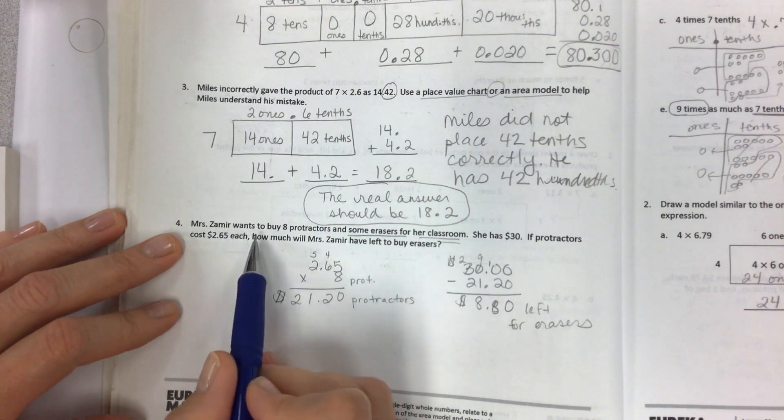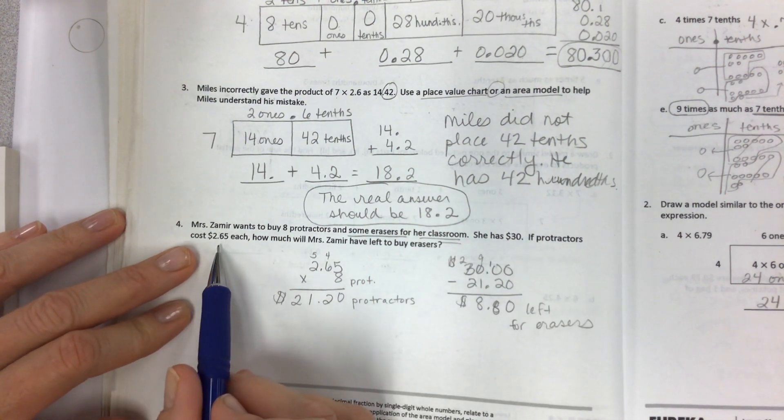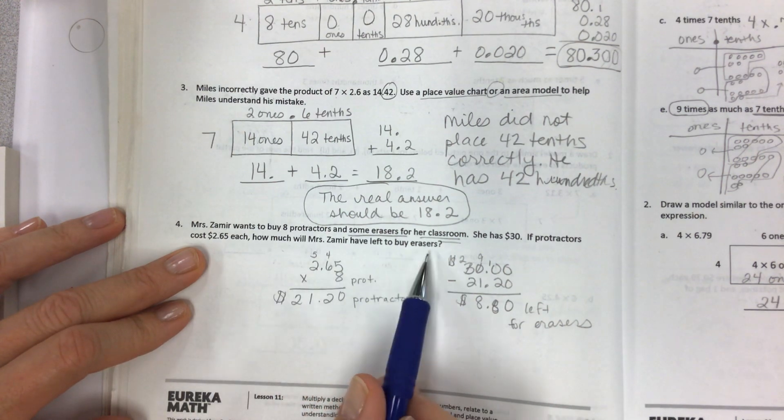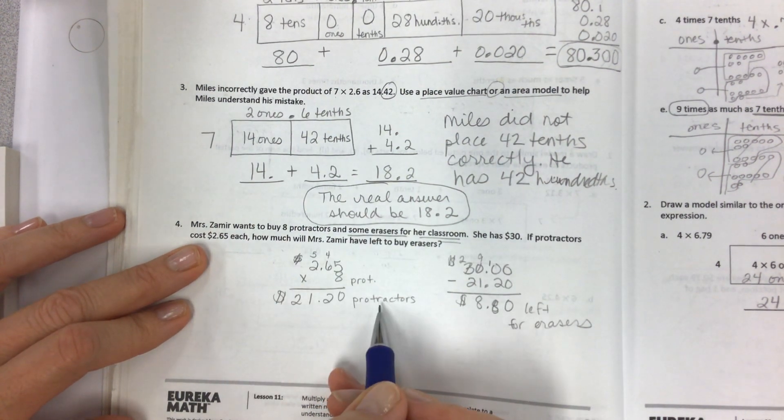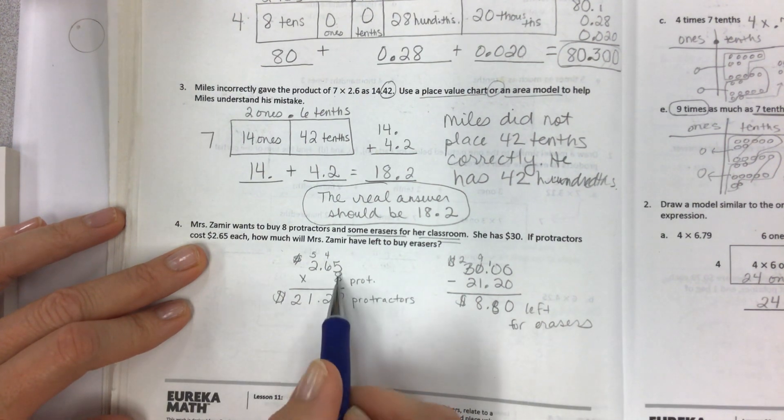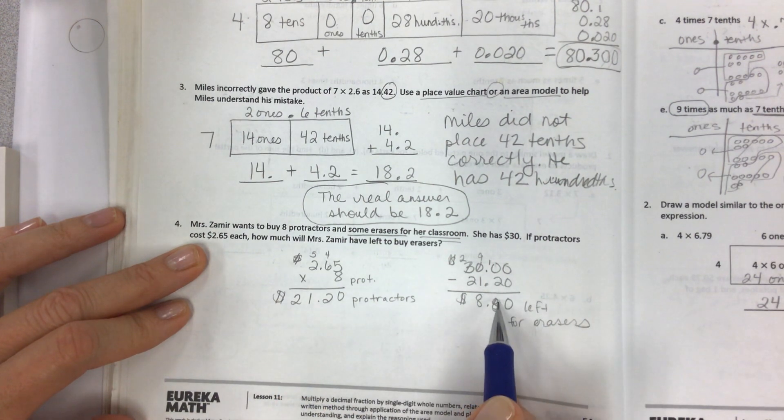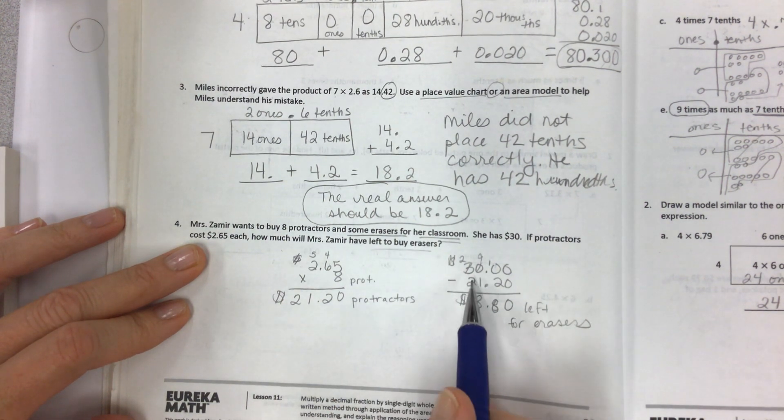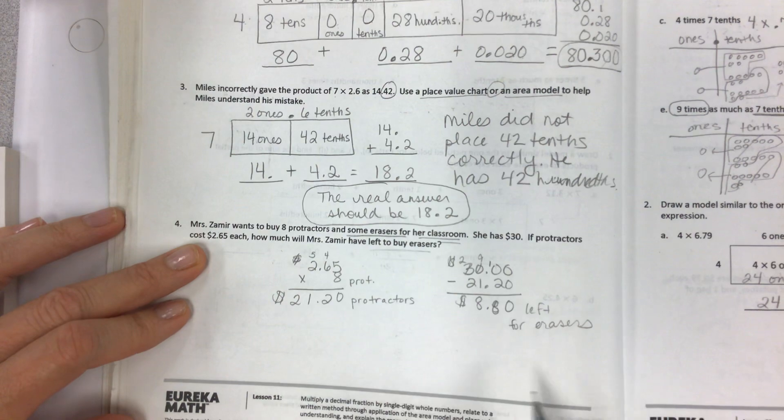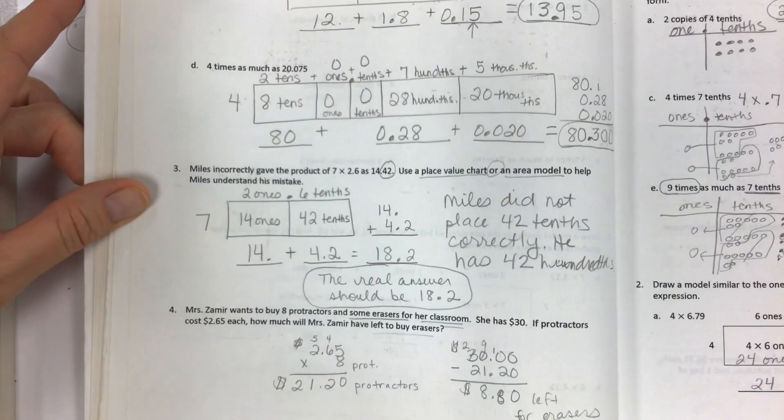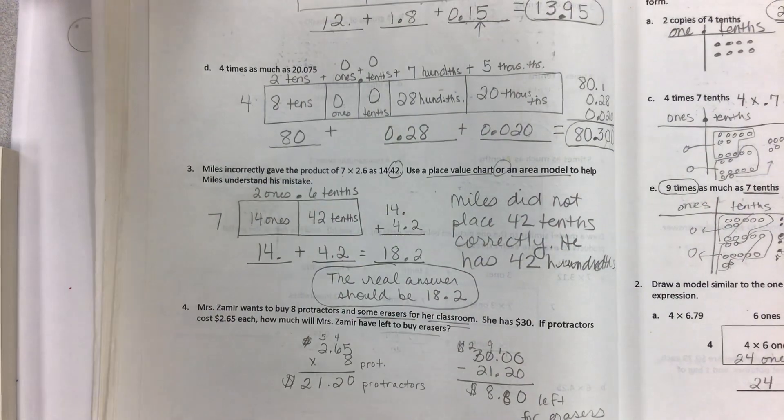Then Mrs. Zamir, hopefully I finished this one, wants to buy eight protractors and some erasers for her classroom. She has thirty dollars. If protractors cost two dollars and sixty five cents each, how much will Mrs. Zamir have left to buy erasers? So you have your two dollars and sixty five cents each, that's money, times eight protractors, label everything. Multiply using the standard algorithm, regroup as needed. She'll spend twenty one dollars and twenty cents on protractors. So how much will she have left to buy erasers? You have to find the difference between what she has and what she will spend. And this is the change that's left over for erasers. So I hope this is clear and helpful for you guys. We will spend a lot of time doing the notes tomorrow before we jump into the workbook, but this can help you finish the problem set. See you soon!